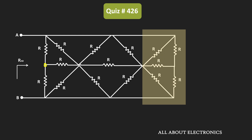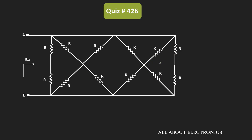That means all these nodes are at the same potential, and therefore no current will flow through these three resistors. Due to that, it doesn't matter whether these resistors are present in the circuit or not. So for simplicity, we can directly remove these three resistors from the circuit. All these nodes are at the same potential, so let us draw one line over here representing the equipotential line.